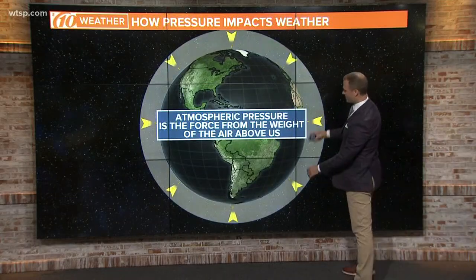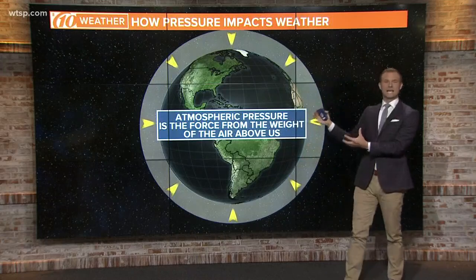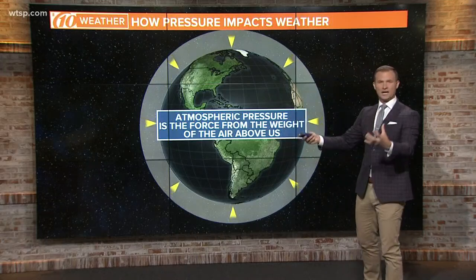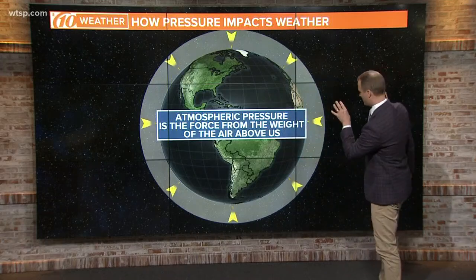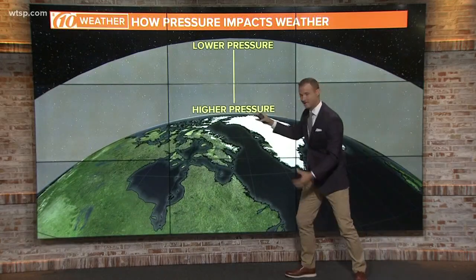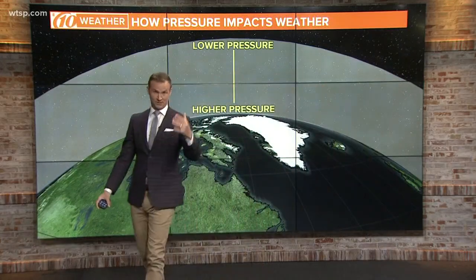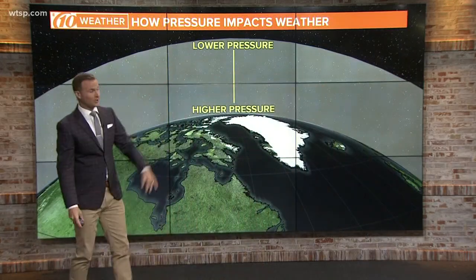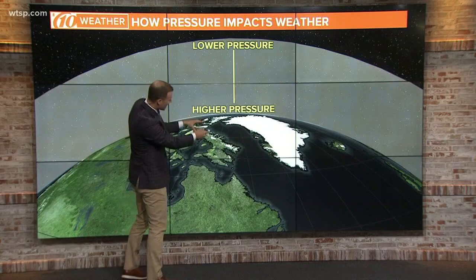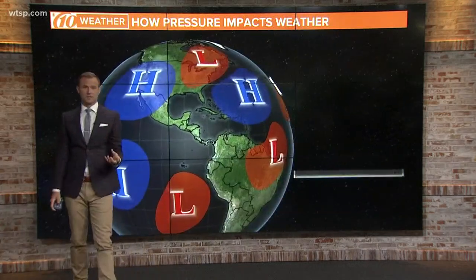The atmospheric pressure is literally the force from the weight of the atmosphere on us here on the surface. As you get closer to the surface of the Earth, the pressure increases because there's more air on top of us pushing down on us here on the surface of the Earth.